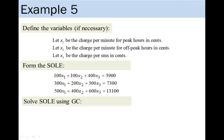Then, we solve this system of 3 linear equations and 3 variables using GC. How can we check our answer? We can sub the values of x1, x2, and x3 back into the left-hand side of any of the 3 equations above to check that it equals to the right-hand side.